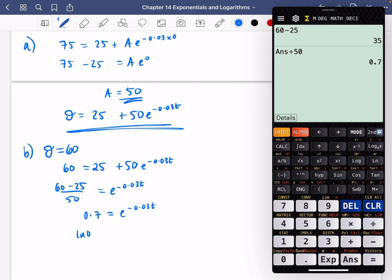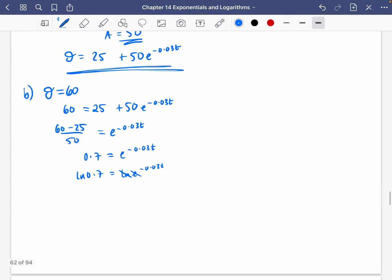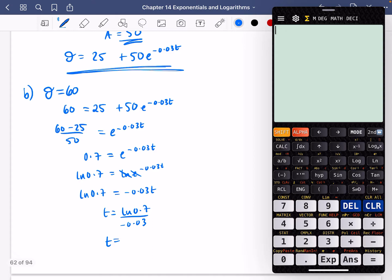If I do ln of both sides, ln(0.7) = ln(e^(-0.03t)). The ln and e cancel, so ln(0.7) = -0.03t. So t is ln(0.7) divided by -0.03. ln(0.7) is negative, so this is positive. We get that the time is 11.9 minutes to one decimal place.